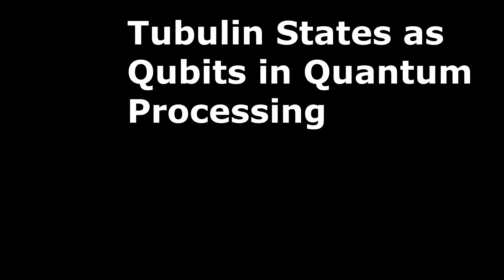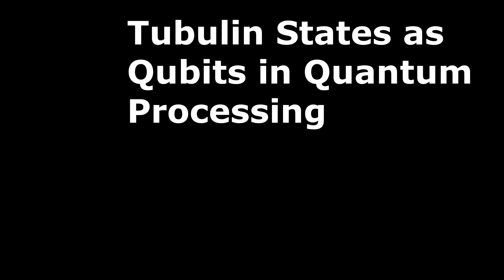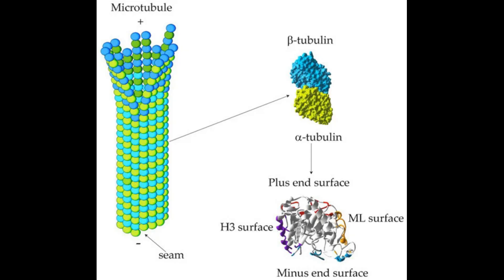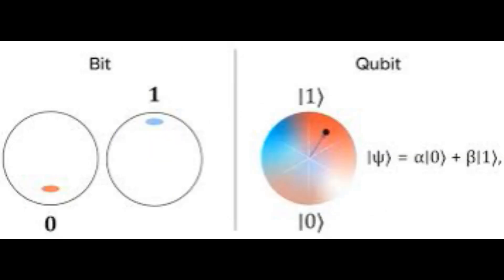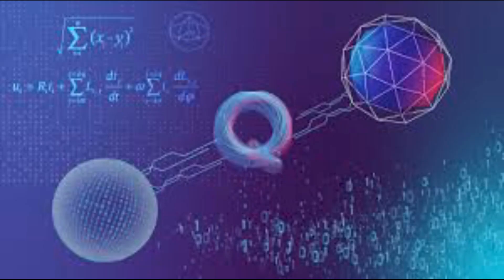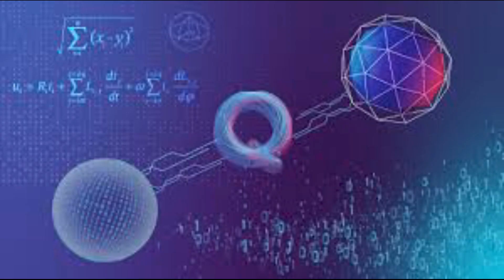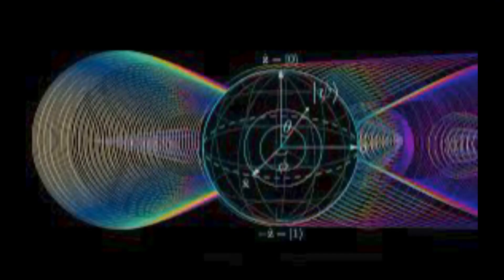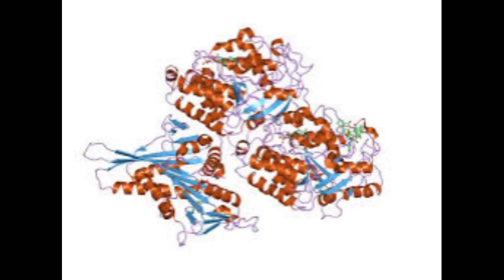In the Orch-OR model, tubulin protein molecules in the microtubules of neurons are assumed to be the fundamental units of quantum processing in the brain. They essentially behave like qubits, the quantum analogues of classical bits. These tubulin states are proposed to enter a superposition in which they exist in multiple possible states simultaneously.